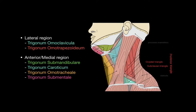The next triangle is going to be the homo trapezoidium. One border is the trapezius muscle, another border is the sternocleidomastoideus, and then you have the inferior border of the homo hyoid muscle again — so those are the two muscles forming it.